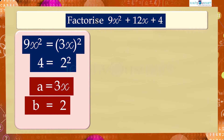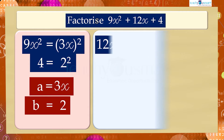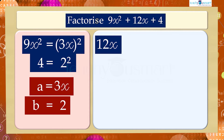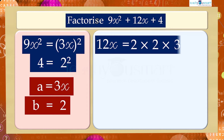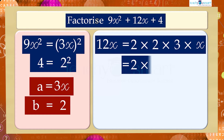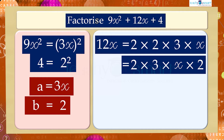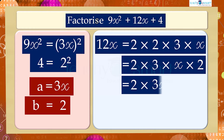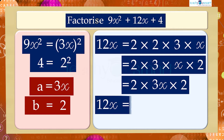The term 12x can be written as: 12x = 2 × 2 × 3 × x = 2 × 3x × 2, which is equal to 2 × a × b.